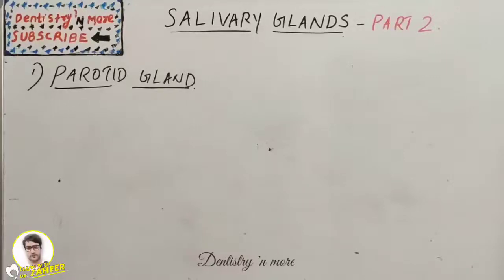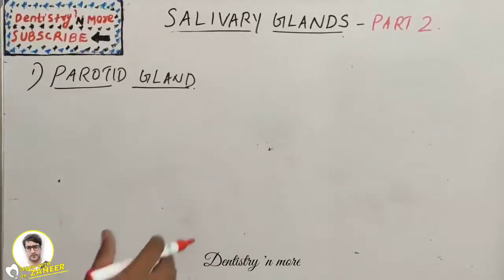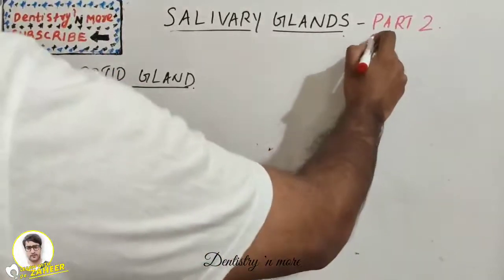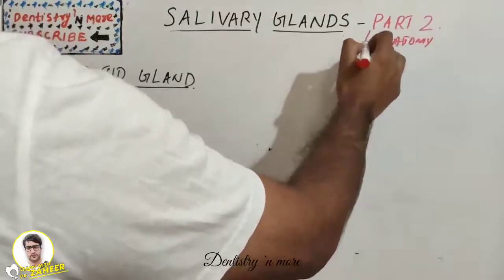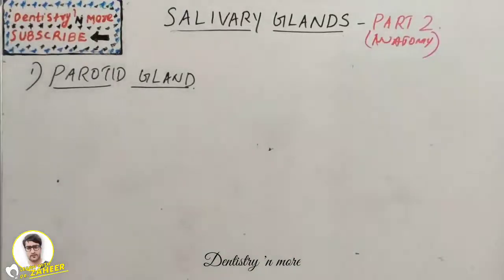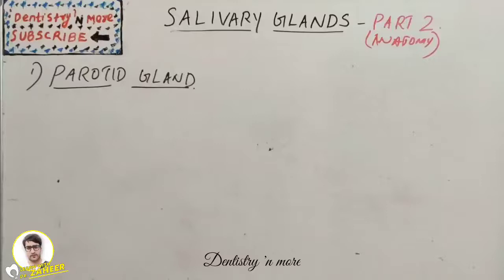Hello everyone, welcome back to another session in Dentistry and More. We are continuing our salivary gland session about the anatomy of various salivary glands. We learned the major salivary glands: parotid gland, submandibular gland, and sublingual gland. We also have minor salivary glands. We'll start with the parotid gland.